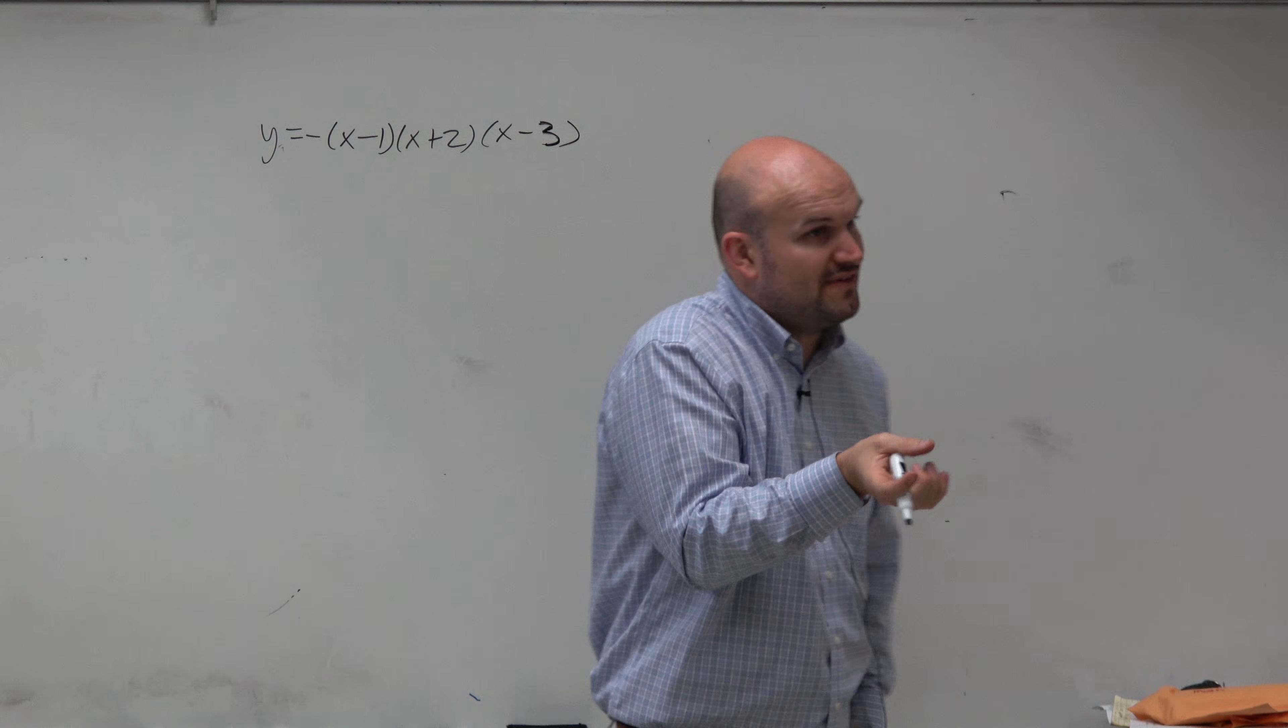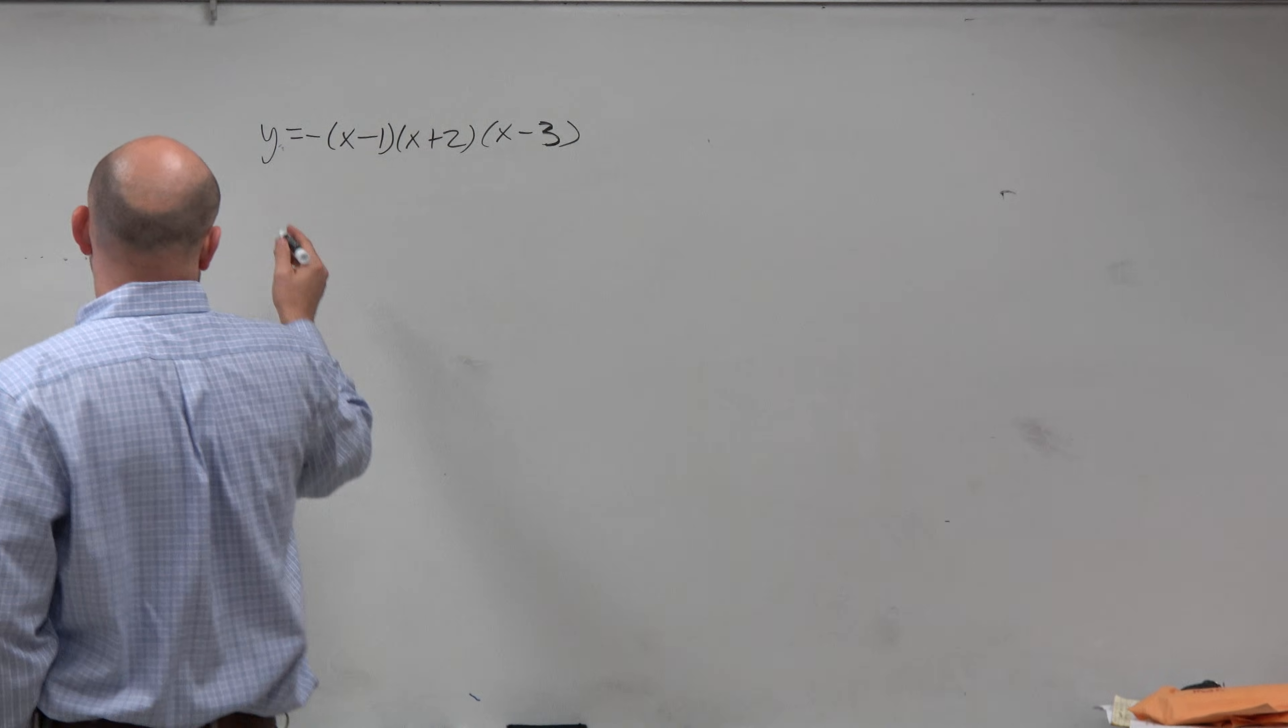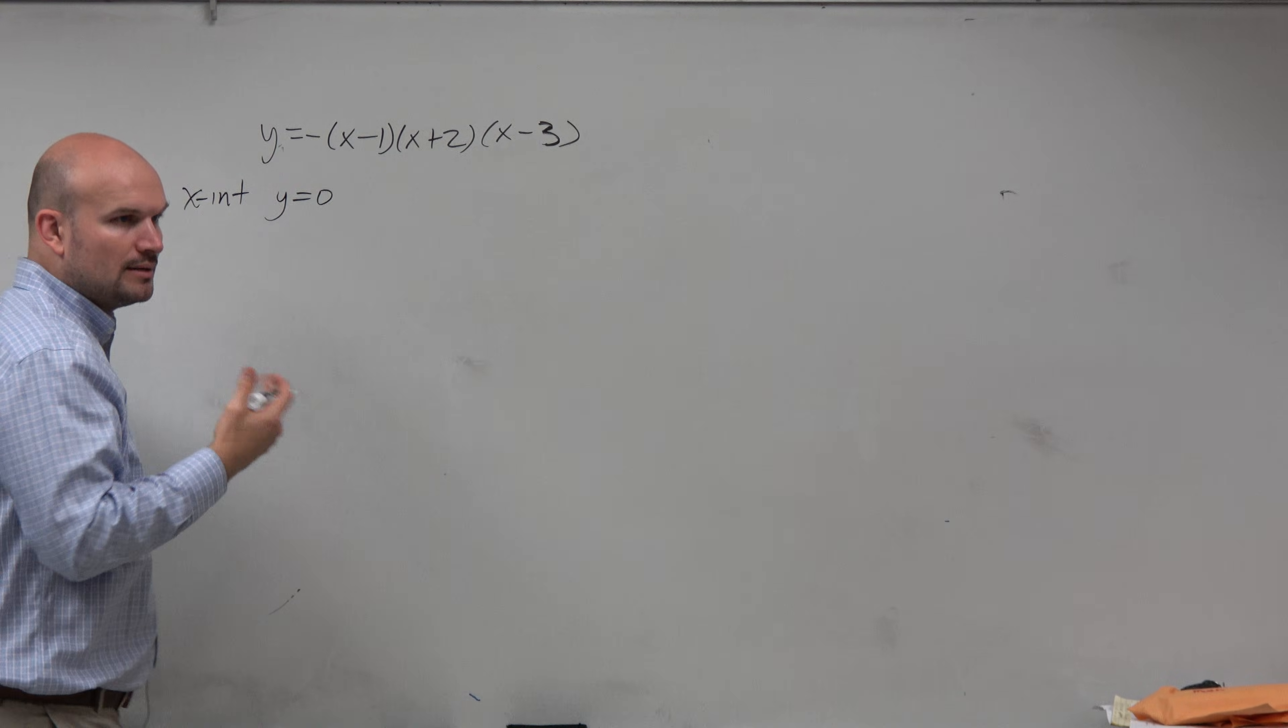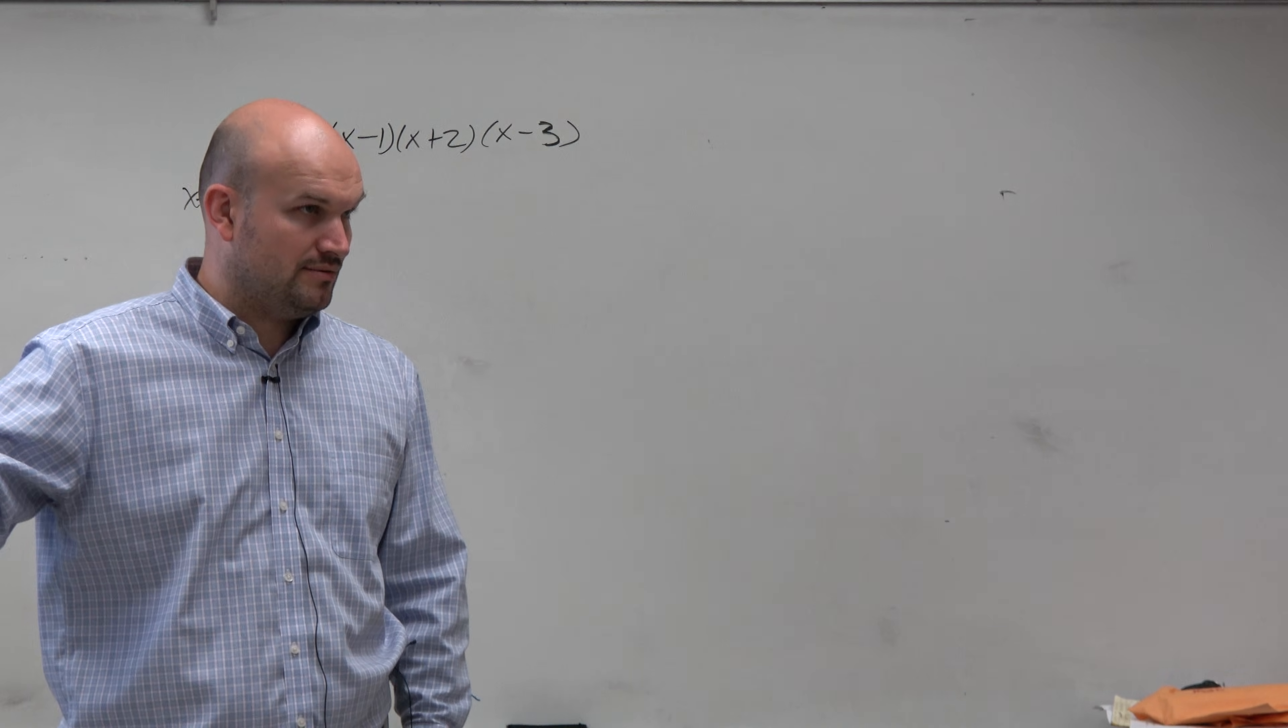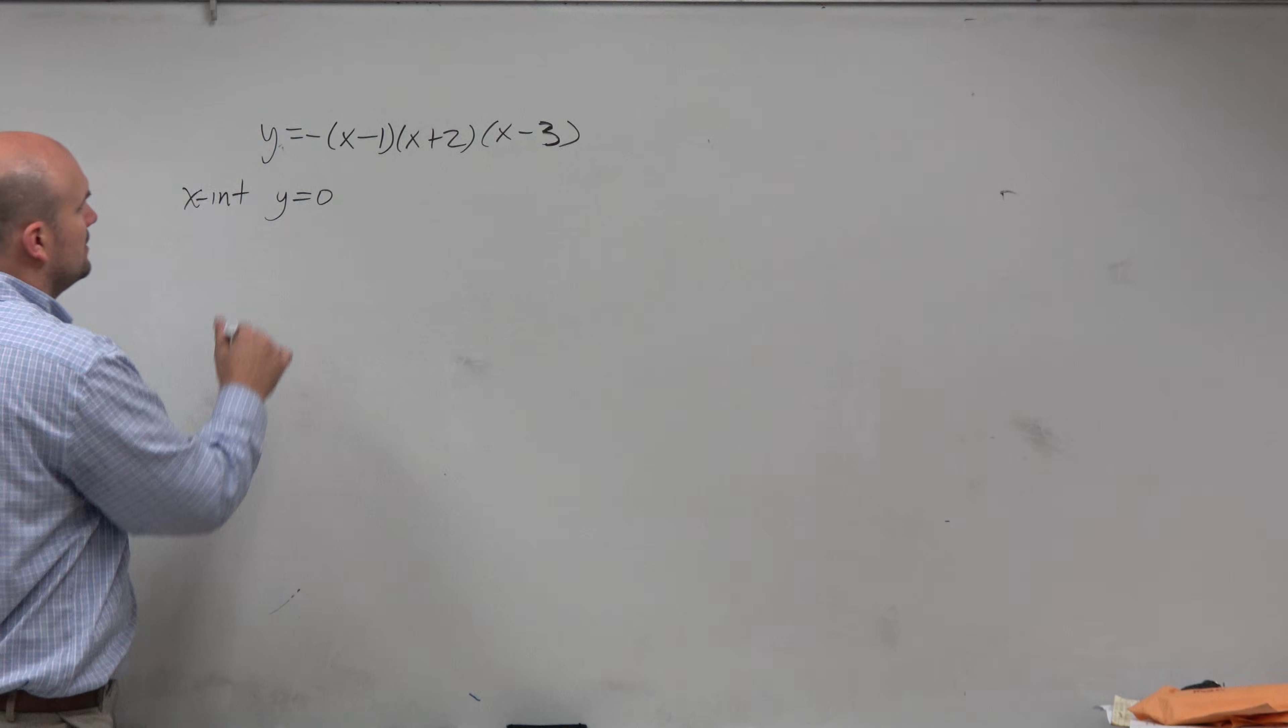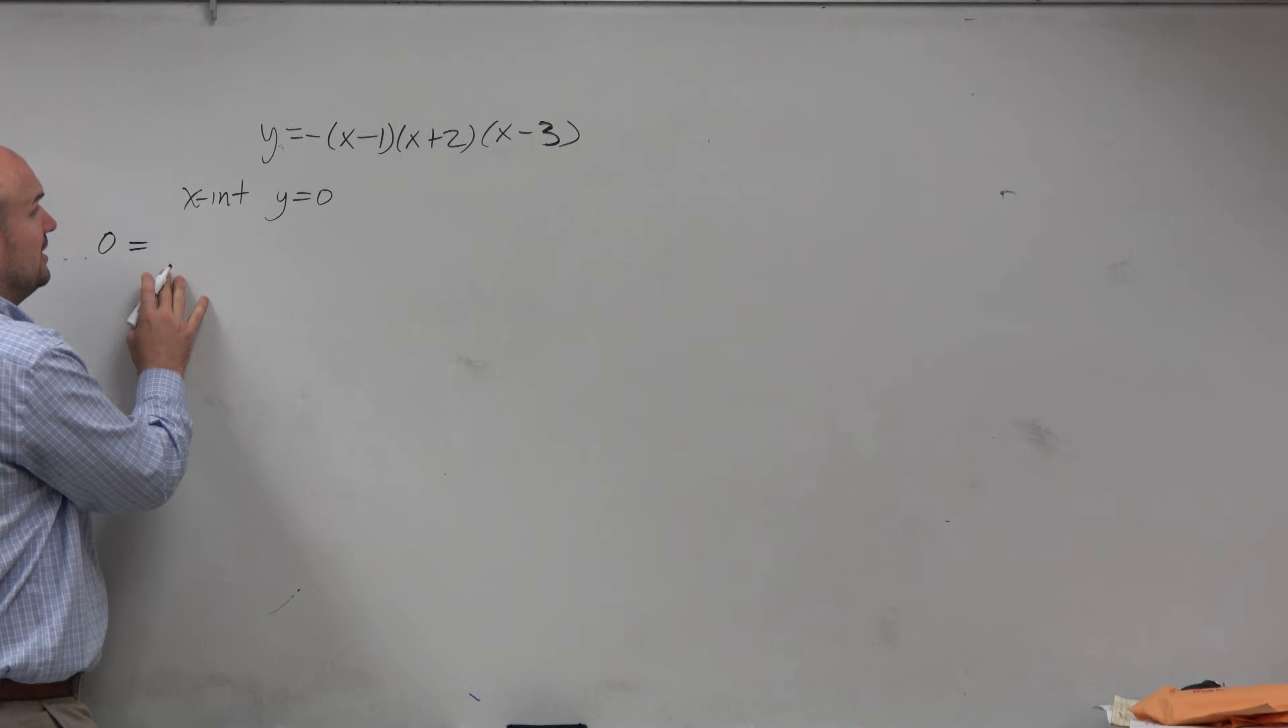So again, notice if I want to find the x and y intercepts, the x-intercept is when y is equal to 0. The cool thing about this is that's the same thing for functions. It doesn't matter what function I'm talking about, going back to last chapter. The x-intercept is the x values when y is equal to 0. So I basically just replace y with 0 and I can go ahead and solve.